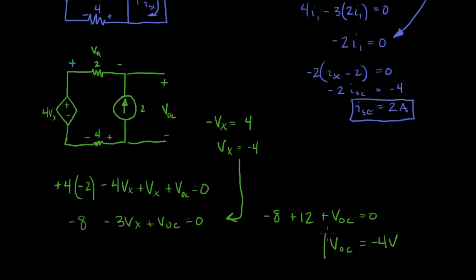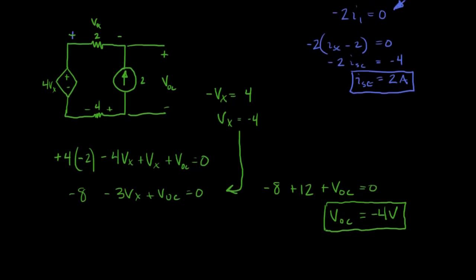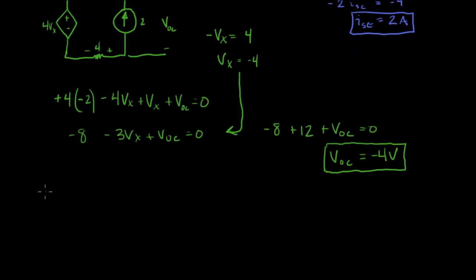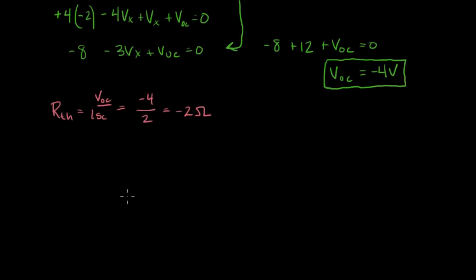So there you go. So there's a situation in which we have a negative resistance. Look at this. We have positive current, negative voltage. So when we go and calculate our R Thevenin value, R Thevenin equals VOC over ISC. And that's minus 4 over 2, which equals minus 2 ohms.